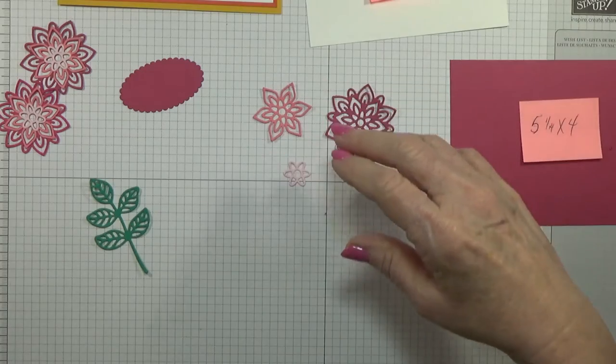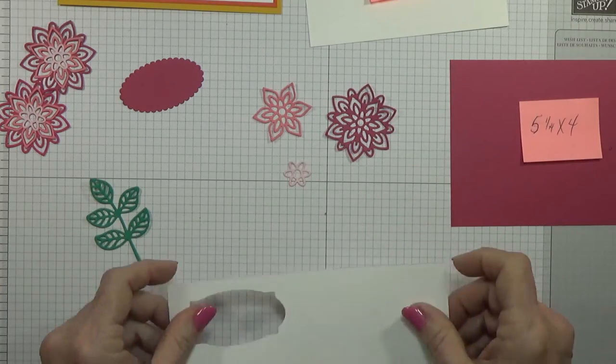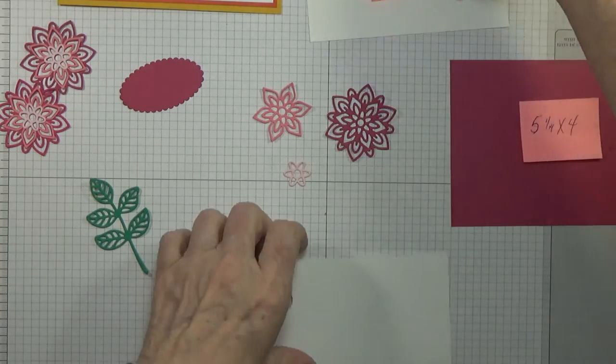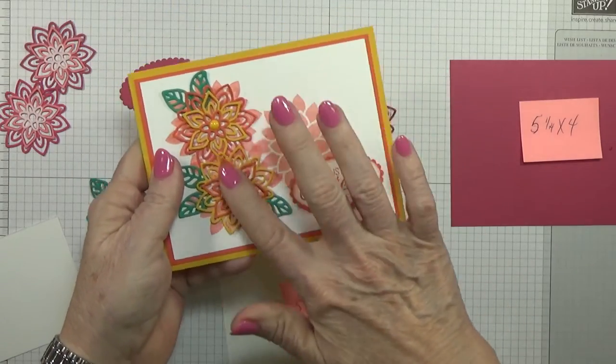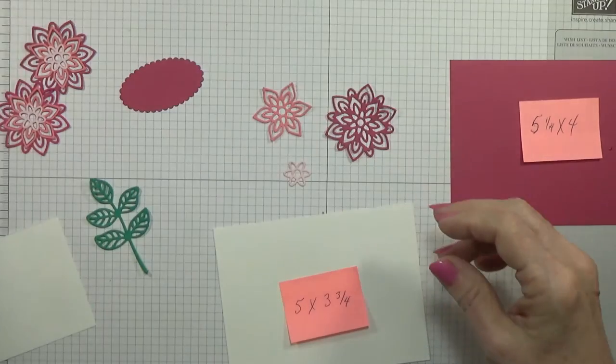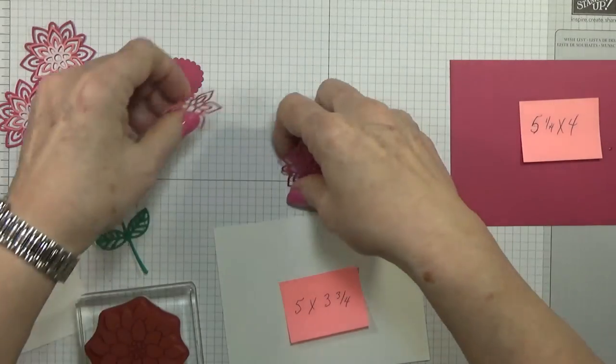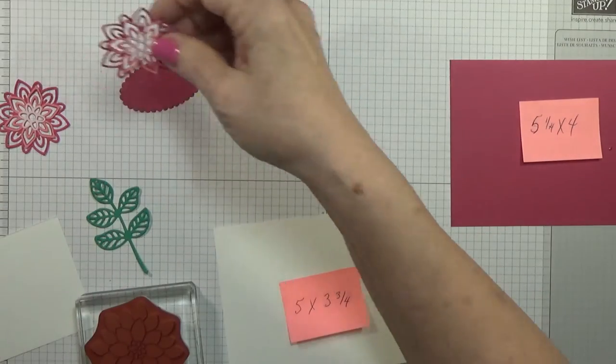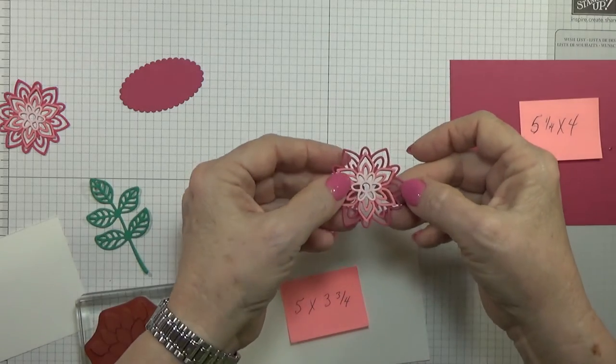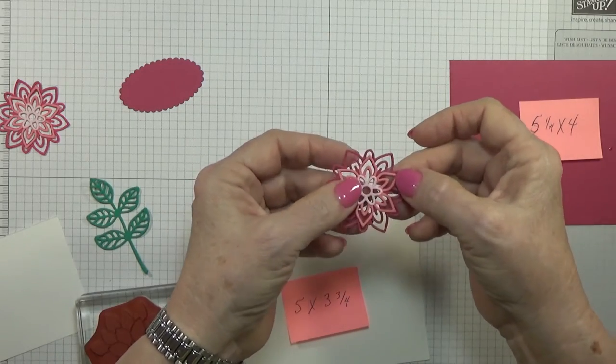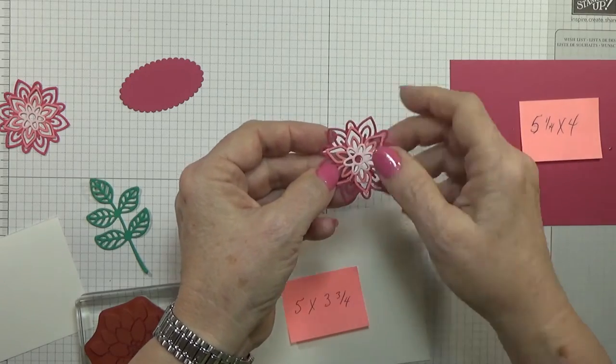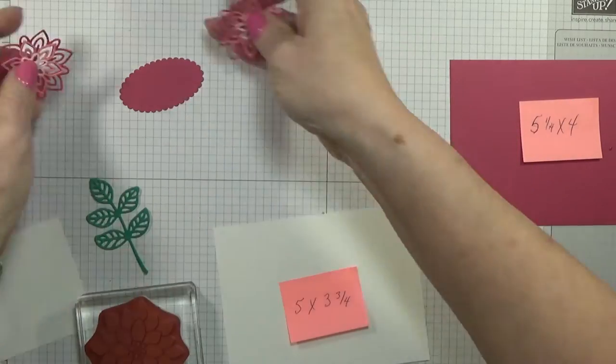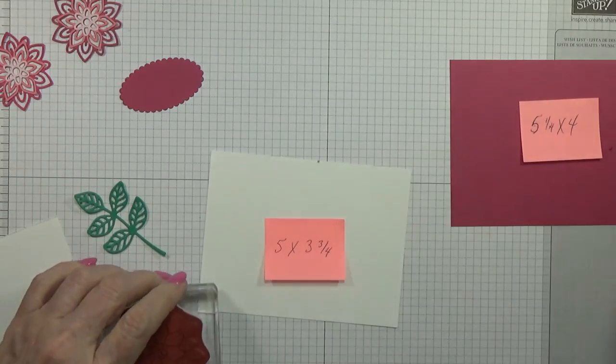The base with the scallops on it is cut in the Rose Red, and for the sentiment of course we'll have the Whisper White. I have a piece of scrap over here that I will be stamping it on, but for right now I want to get these background stamping done. What I did was I took these flowers and put them together—the Rose Red, the Flirty Flamingo, and the Pink Pirouette—and I put them right together in the middle.